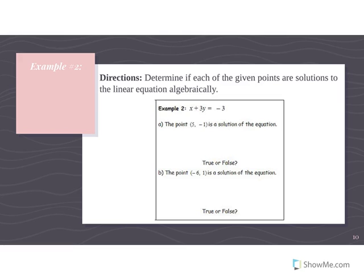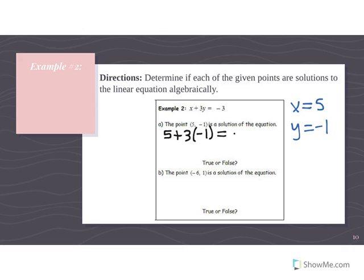For Example 2, part A, testing point (5, -1): plug in 5 for x and -1 for y. We get 5 + 3(-1) = -3. That simplifies to 5 - 3 = 2, and 2 does not equal -3. So this is a false statement — write a slash through the equal sign.